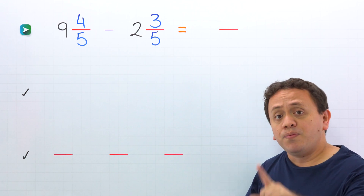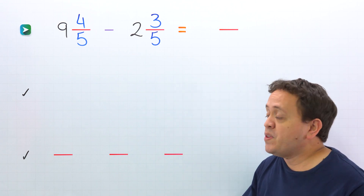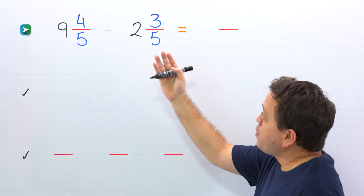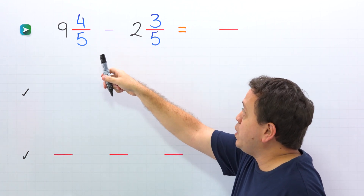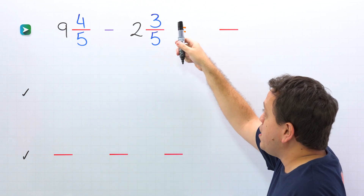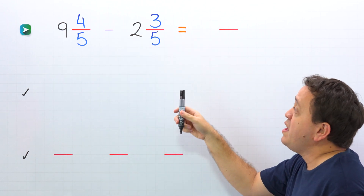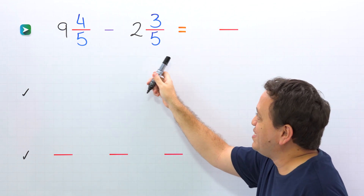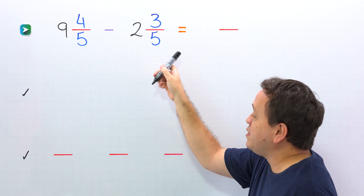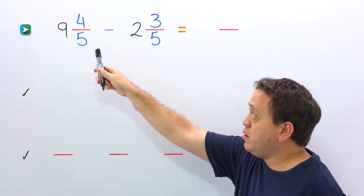Are you ready for the first example? In this example we need to subtract nine and four-fifths minus two and three-fifths. As you can see, these two mixed numbers have the same denominator.